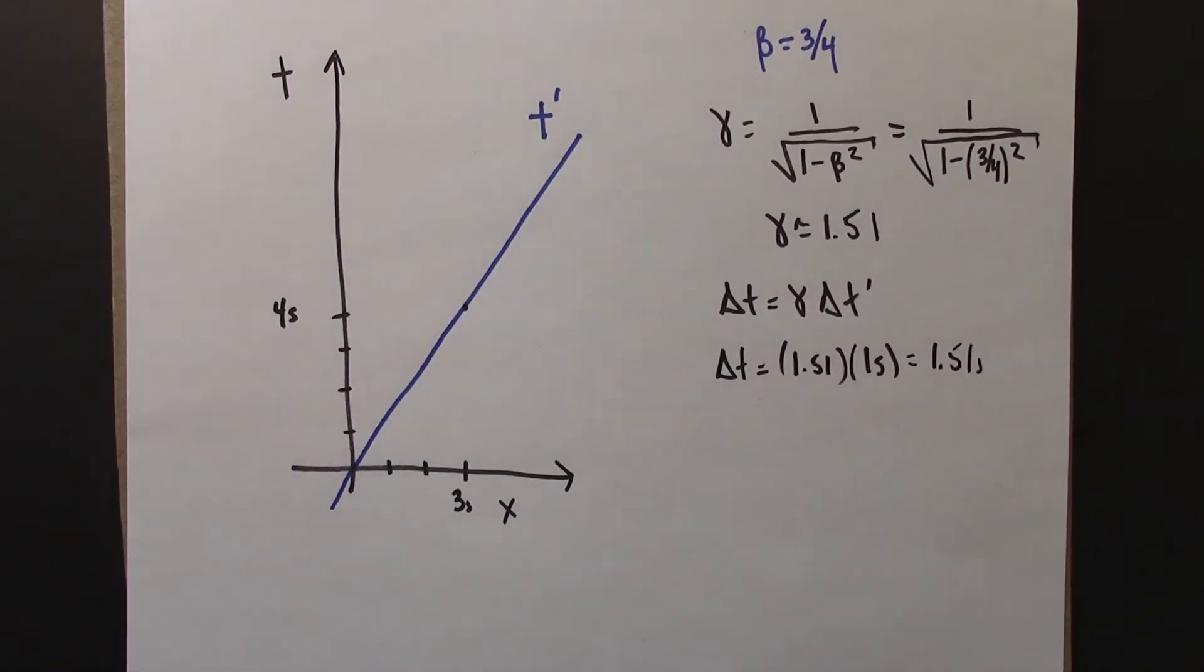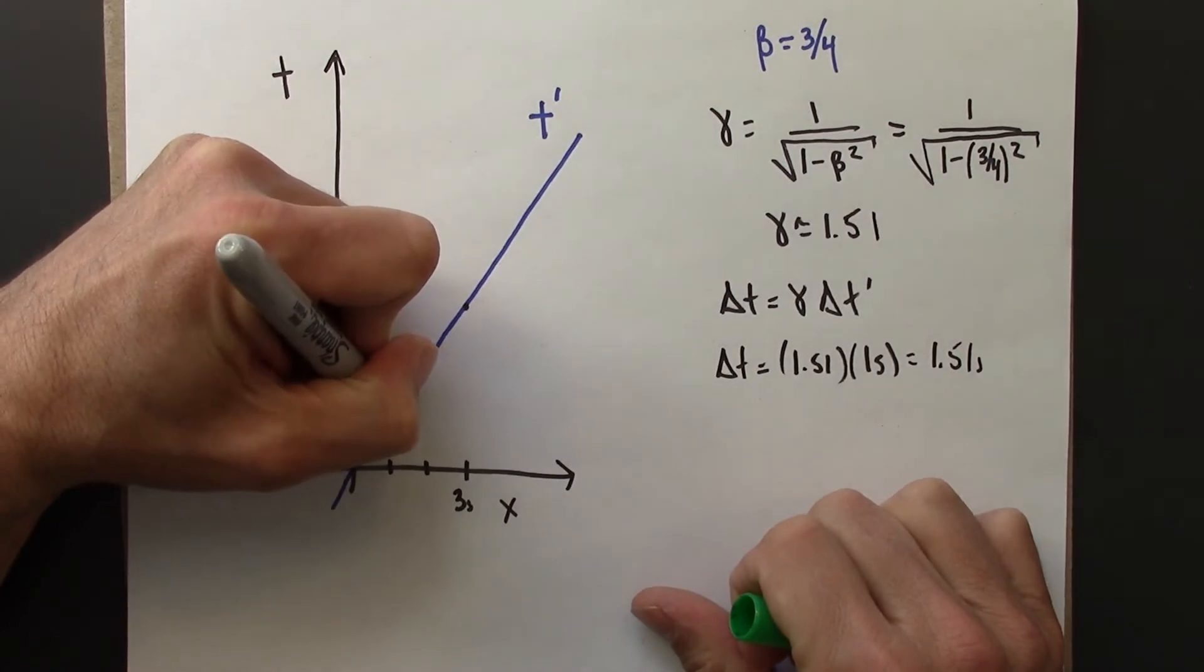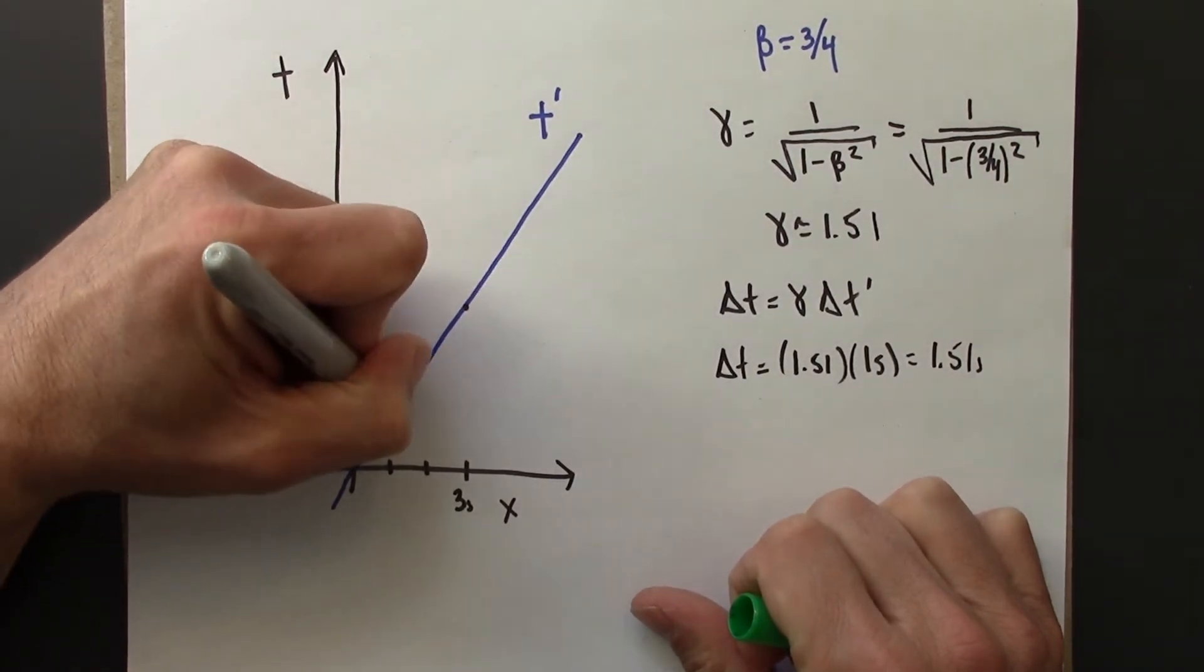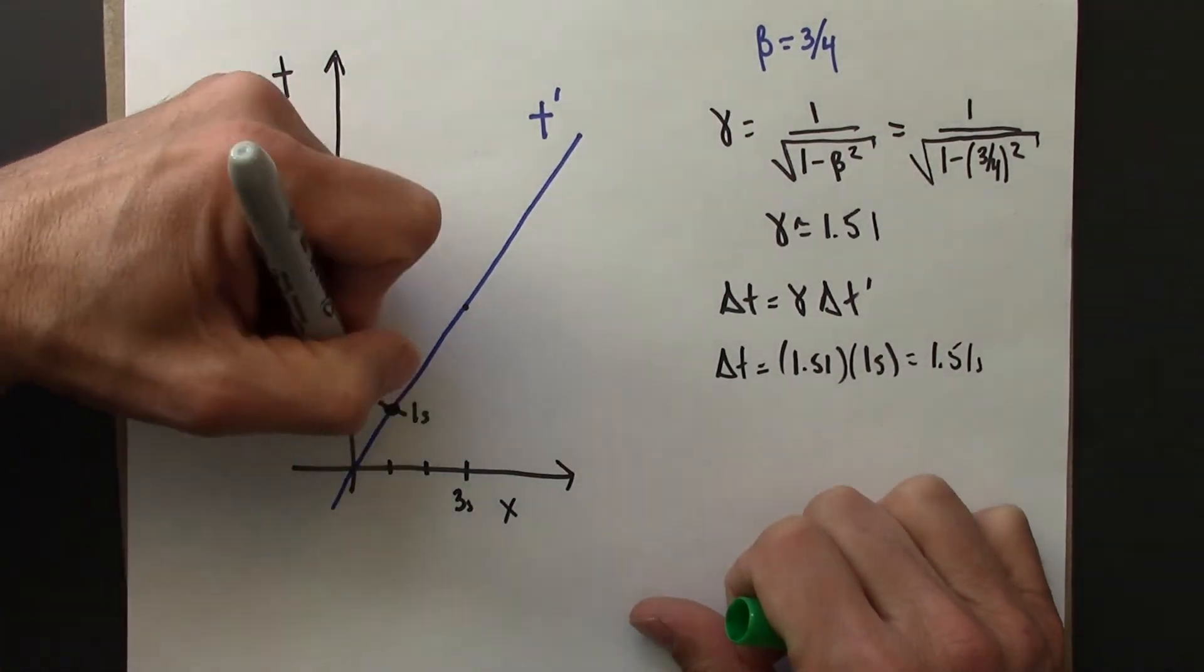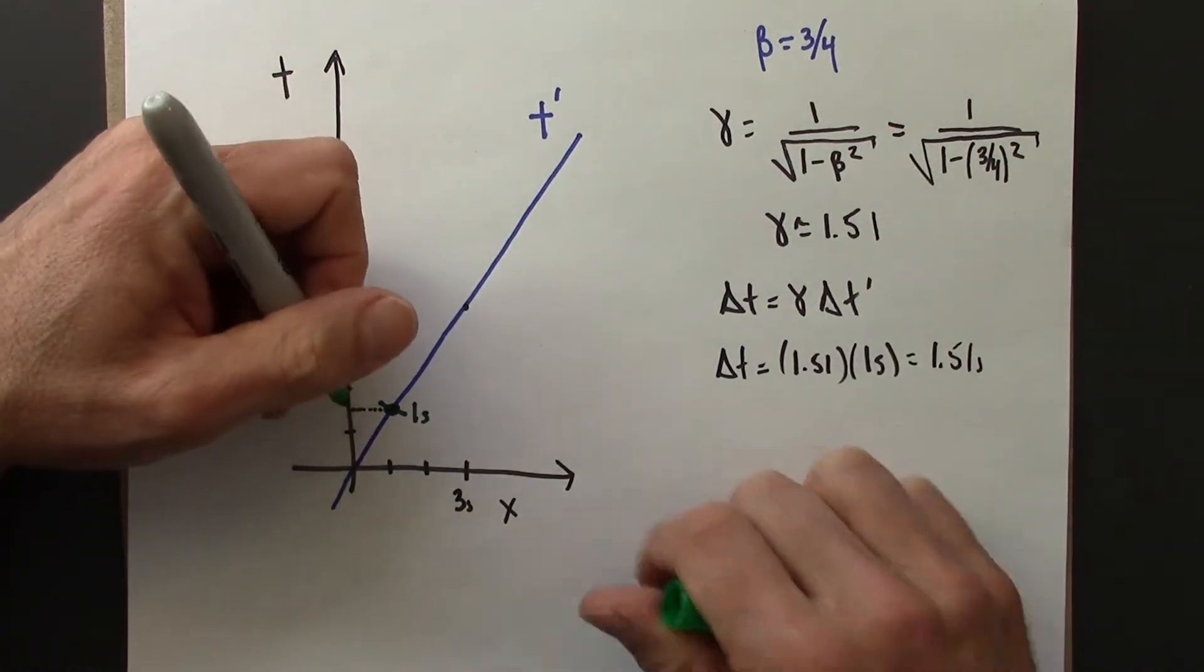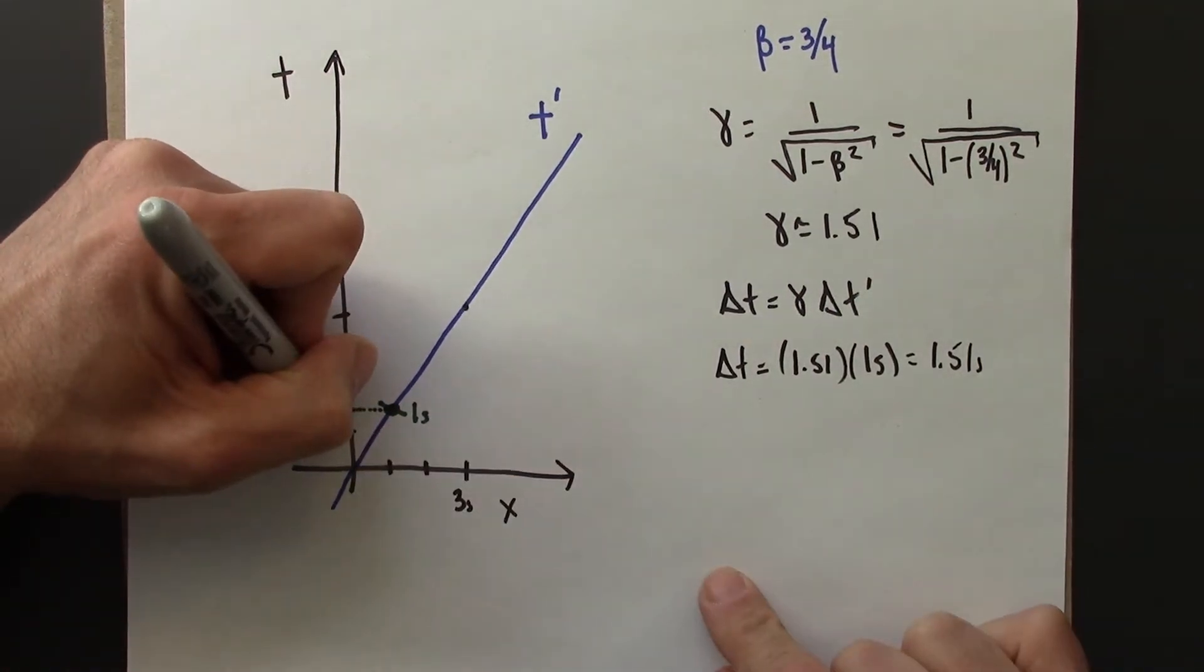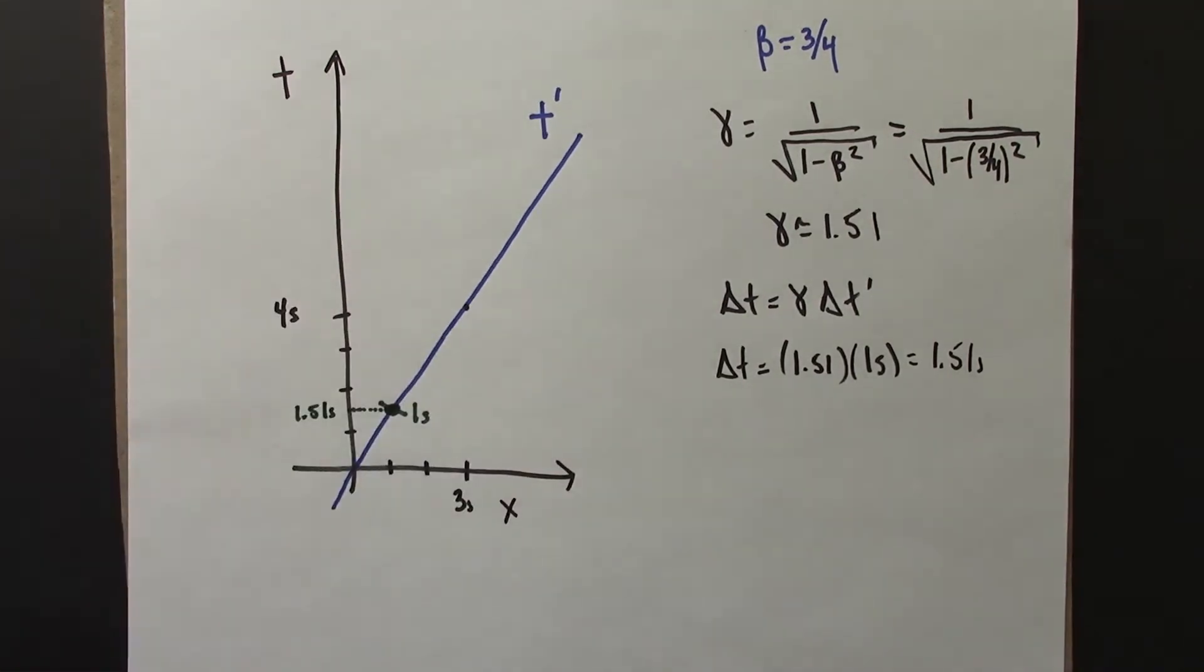Let's see here. I would draw about this. This would be roughly my 1 second mark for Beowulf, and this here is 1.51 seconds.